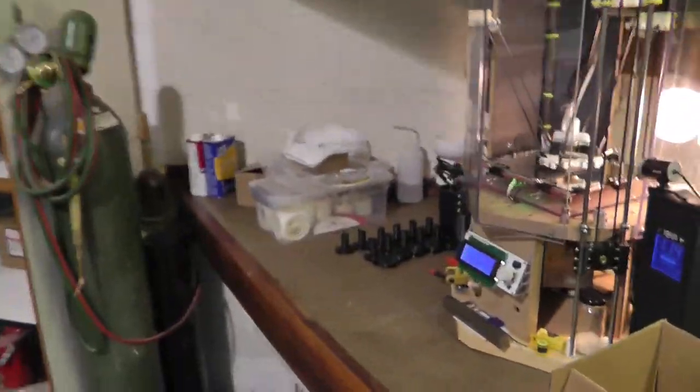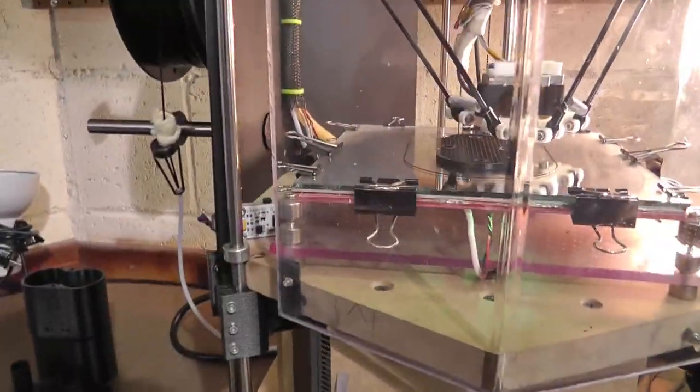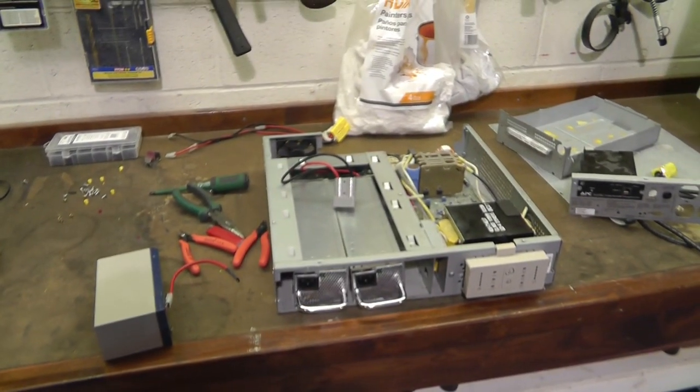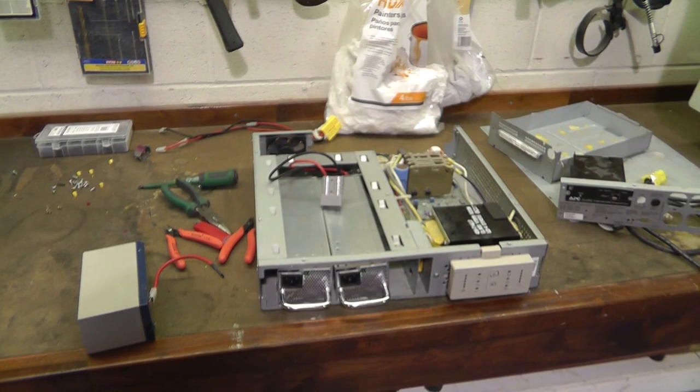This is phase one in the building of my constant variable power supply. You have to excuse the noise in the background in this video. But, I'm currently 3D printing a bracket. And, yeah. So, let's move on to phase two. I'm going to start wiring this thing up. Here we go. See you in the next video.